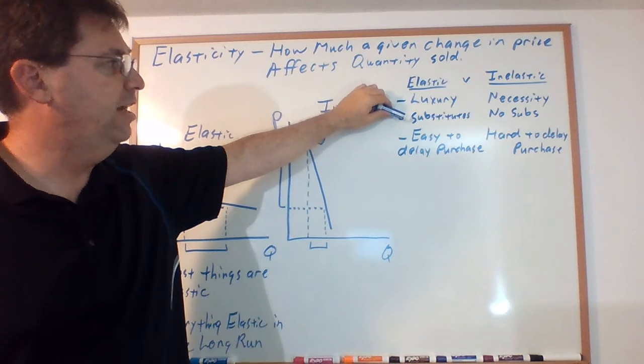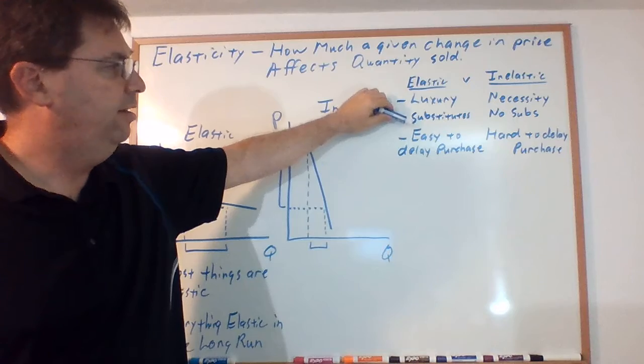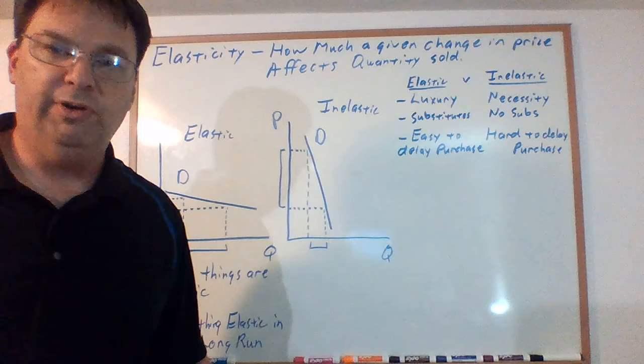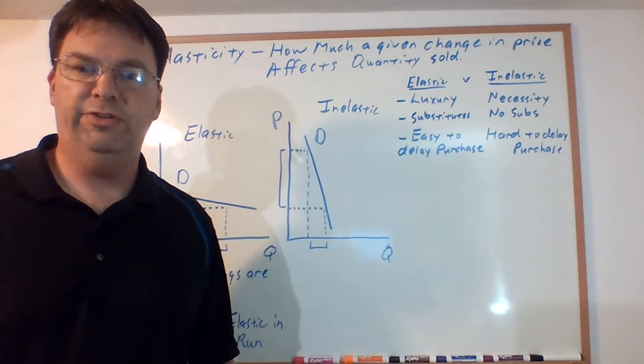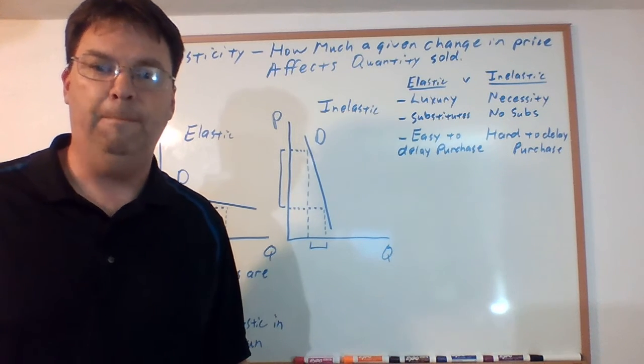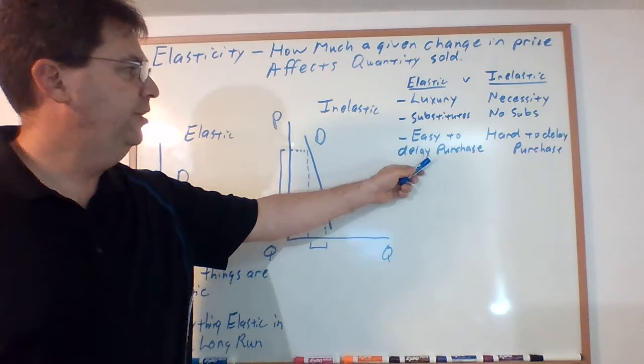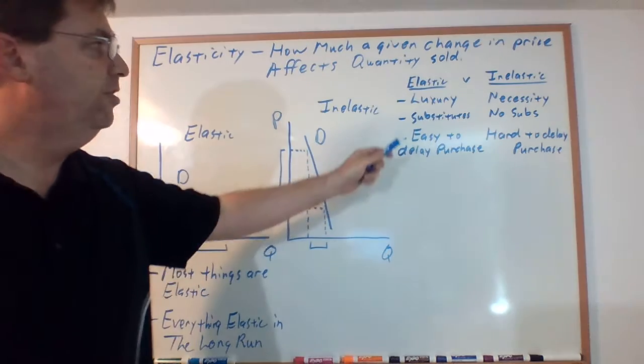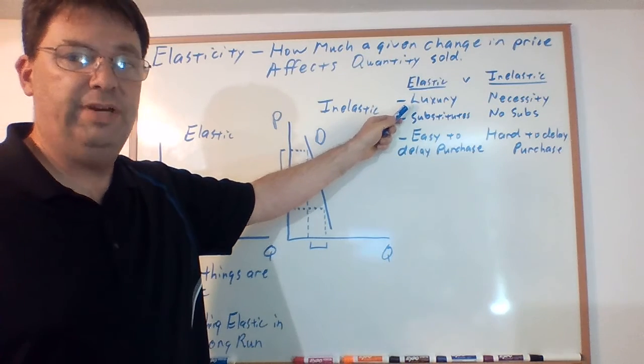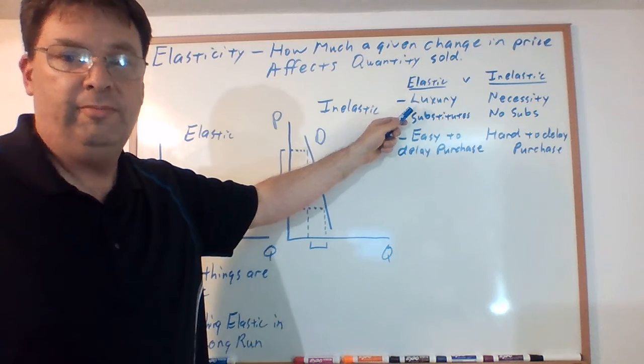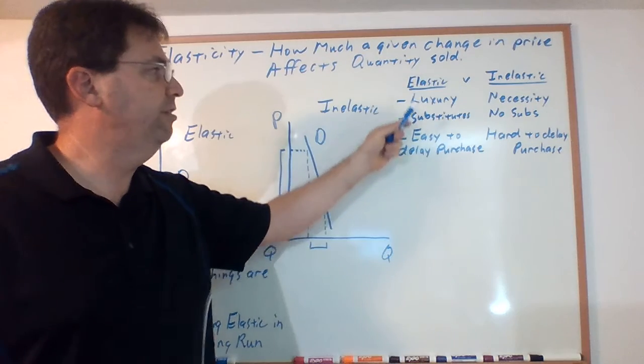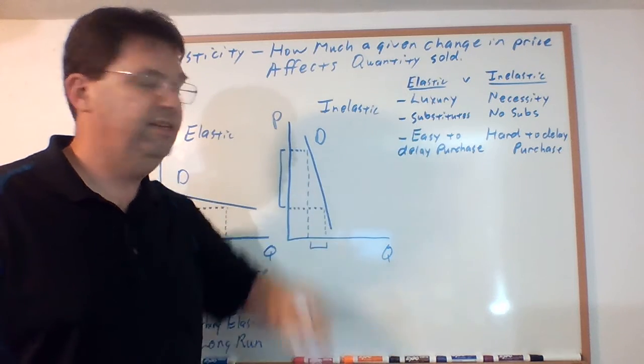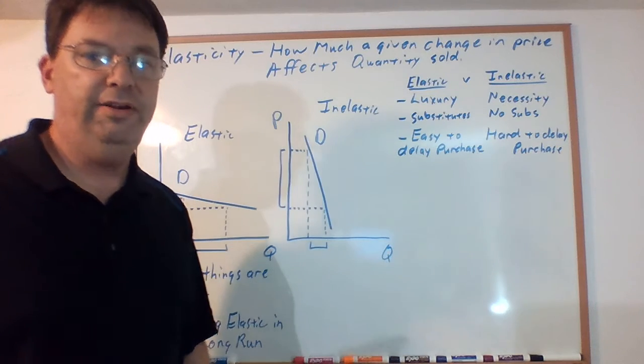There are certain things that make products elastic or inelastic. These are all the things that if these attributes occur, the product is most likely elastic: a luxury item, has a lot of substitutes, or is easy to delay purchase. You could live your whole life without ever ordering a McChicken. It's really easy to delay purchase or buying a shirt or something like that. You've got so many different options and choices. It's a luxury item, you don't have to get a McChicken, you don't need it to live, and it's easy to delay purchase.